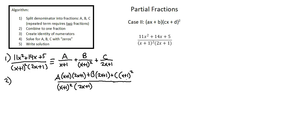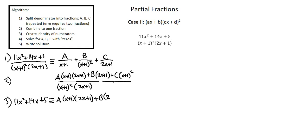Step 3: create identity of numerators. The numerator on the left side, 11x squared plus 14x plus 5, is an identity with a times x plus 1 times 2x plus 1, plus b times 2x plus 1, plus c times x plus 1 squared. In step 4, by use of inspection of the right side of the identity, I'll identify appropriate x values to isolate and solve for a, b, and c.